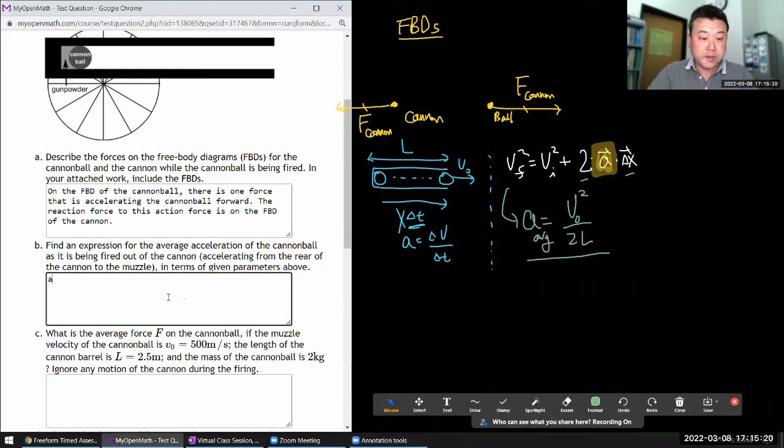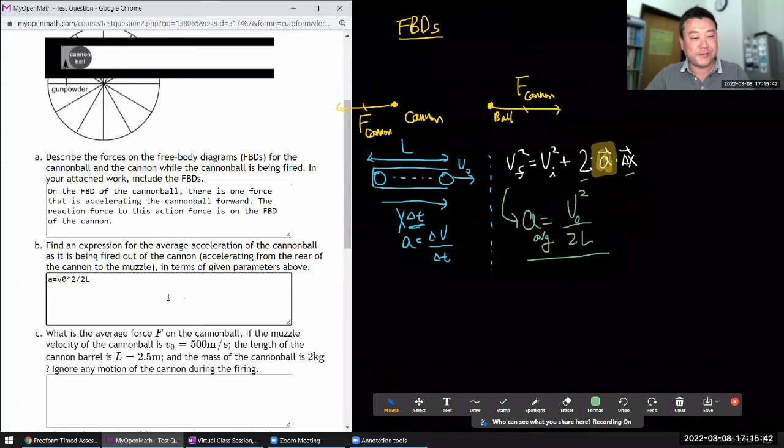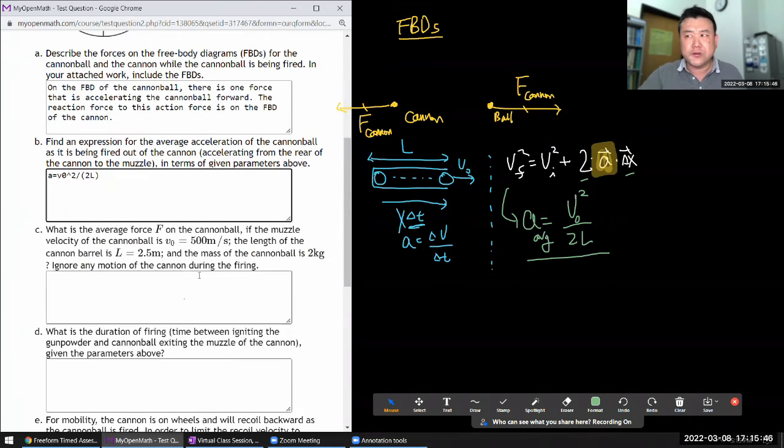My average acceleration is v_naught squared over 2L. By the way all this is graded manually, so if you put it like this without the parentheses I will probably take that as incorrect even though calculators usually won't.